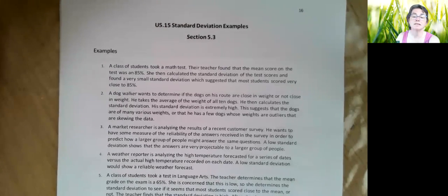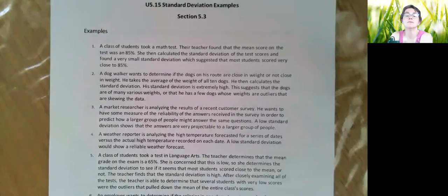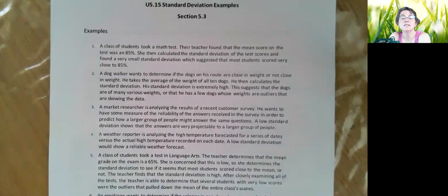Alright, so number one: A class of students took a test. The teacher found the mean score to be 85. She then calculated the standard deviation of test scores and found a very small standard deviation, which suggested that most students scored very close to 85.